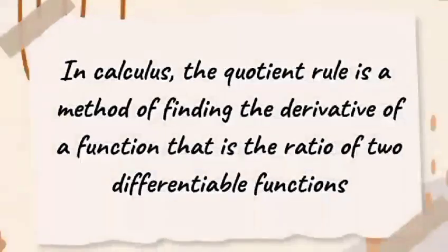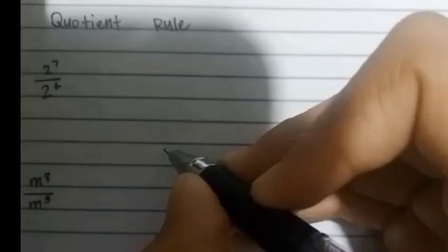In calculus, the quotient rule is a method of finding derivative of a function that is the ratio of two differentiable functions.